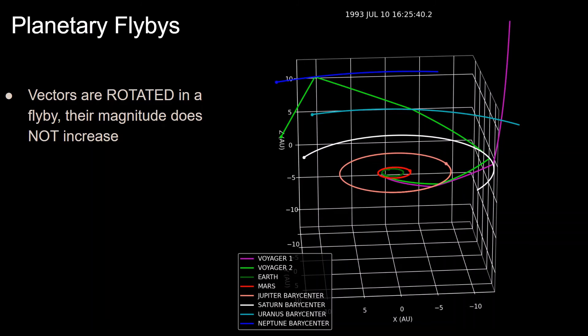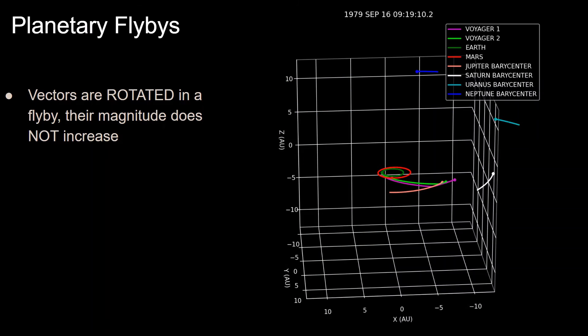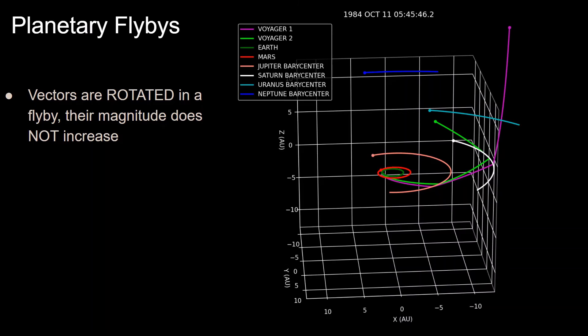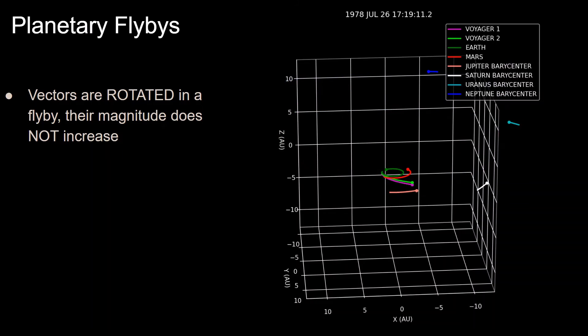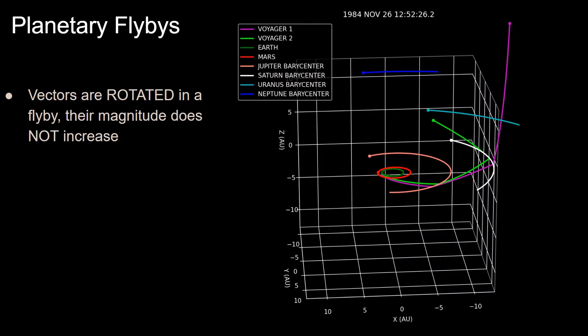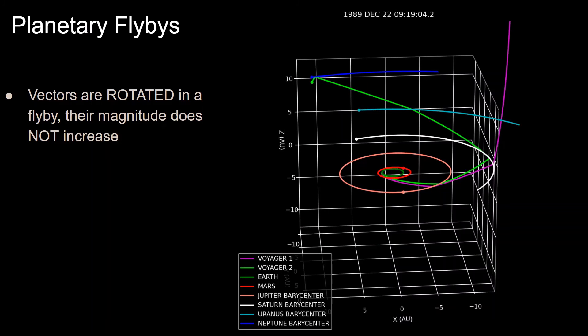And just a quick note on planetary flybys, since the following videos will be going much more in-depth into these, is that one of the most common misconceptions is that a flyby increases the magnitude of the velocity vector, which is false, and it's very important to understand this. So due to the conservation of angular momentum, the magnitude of the velocity vector cannot be increased. So what happens before and after a flyby is that the vector is rotated, but its magnitude stays the same.